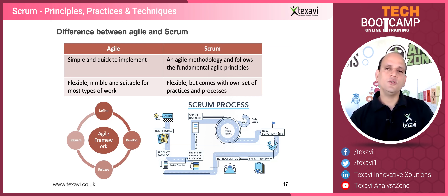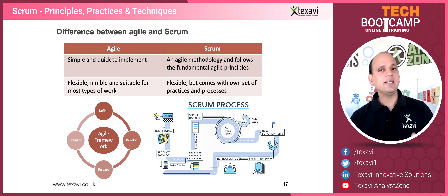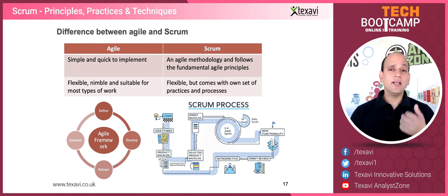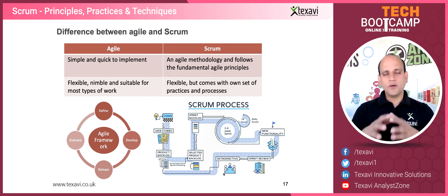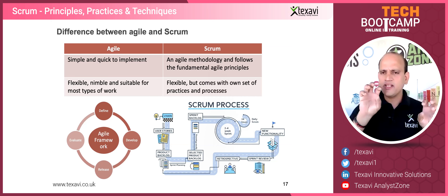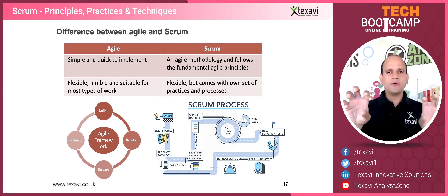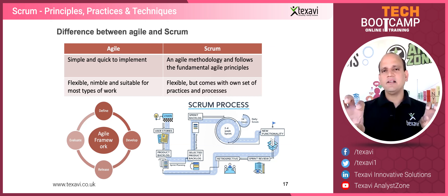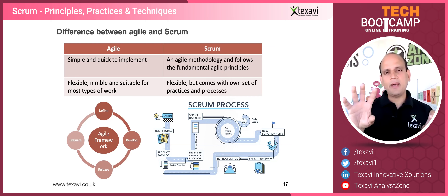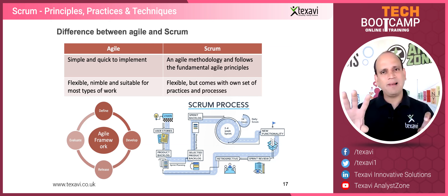Scrum has a sprint backlog and a two-to-four week sprint cycle, after which you can deliver new functionality. Once done with the sprint, you look back at what was produced and how it performed — that's called a retrospective. The beauty of Scrum is you look at two things separately: the product you delivered, and the process — how you did the work.